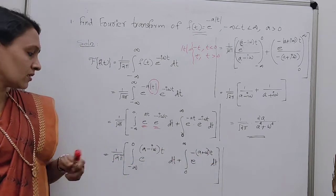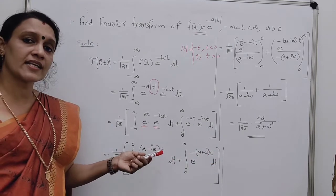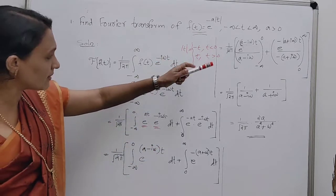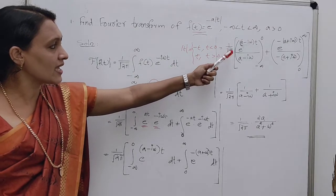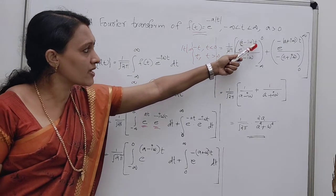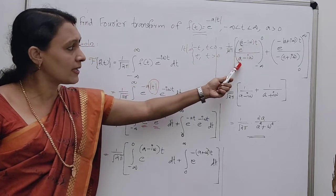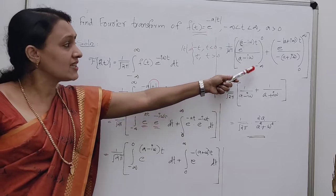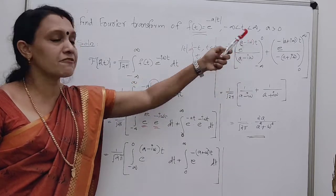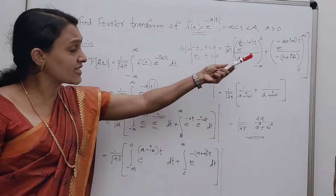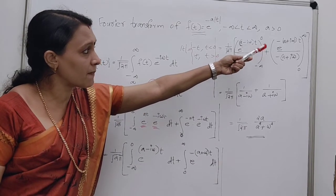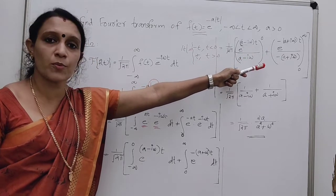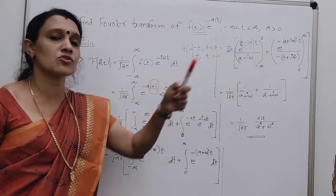Now integrate each term. The integral of e^(ax) is e^(ax)/a. So we get (1/√(2π)) times [e^((a-iω)t)/(a-iω)] with limits minus infinity to 0, plus [e^(-(a+iω)t)/(-(a+iω))] with limits 0 to infinity.